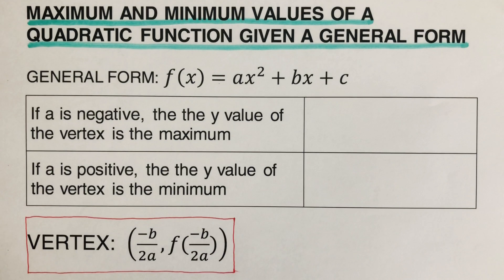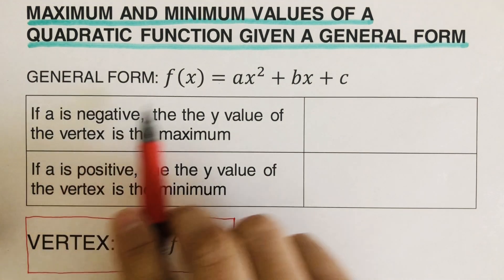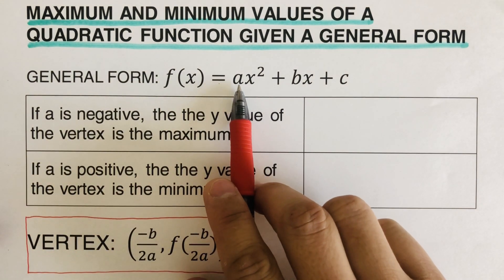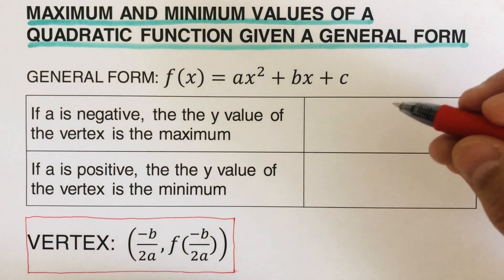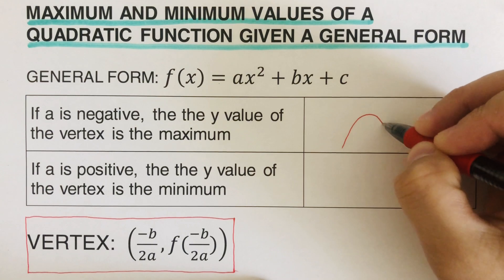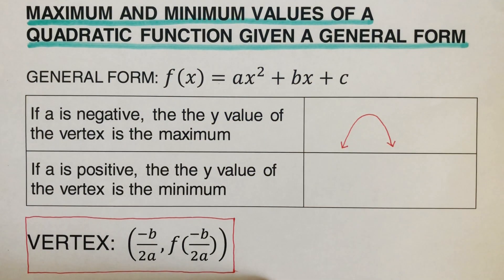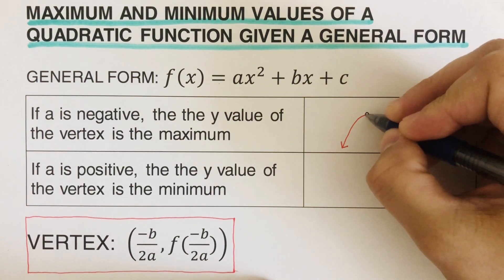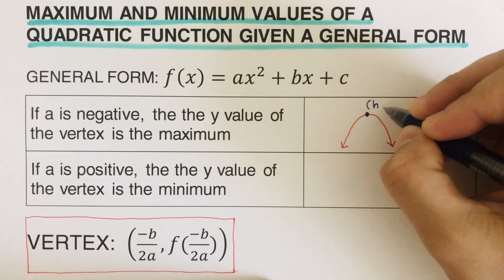So how do we find if a graph has a maximum or minimum? Here's the thing: if 'a' — the coefficient of x squared — is negative, we know that the graph opens downward. And this is our vertex, represented as (h, k).